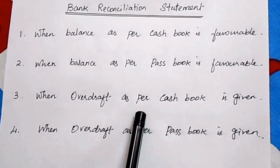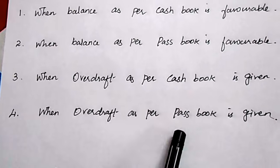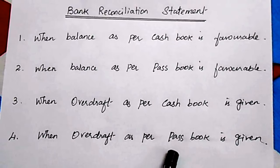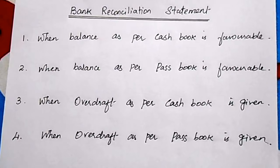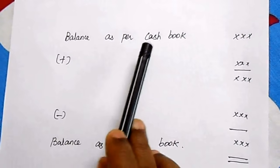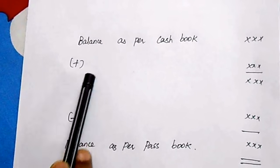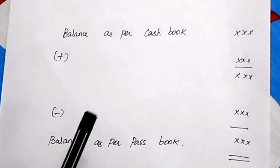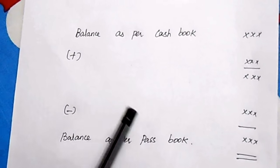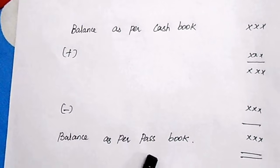When overdraft as per cash book is given, you need to find out the balance as per pass book — the answer may be favorable or unfavorable. The fourth situation is when overdraft as per pass book is given and you need to find out the cash book balance. The simple format is: start with either cash book or pass book balance, add some items and subtract some items, and the final answer will be the other balance.